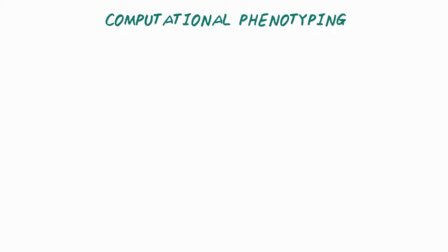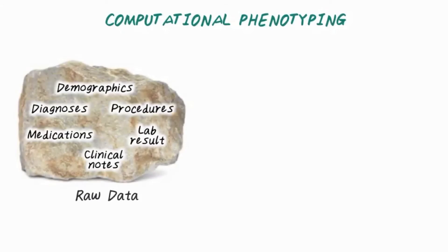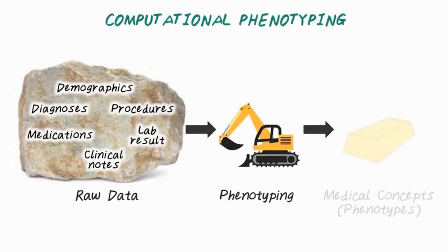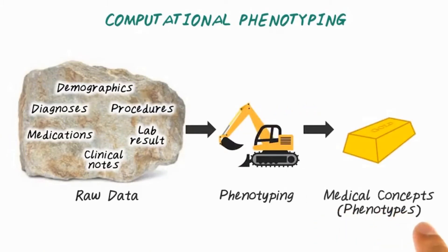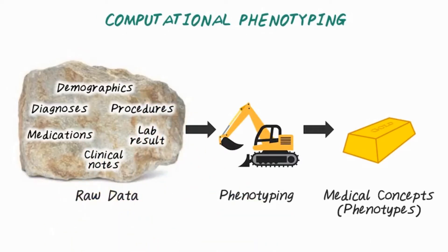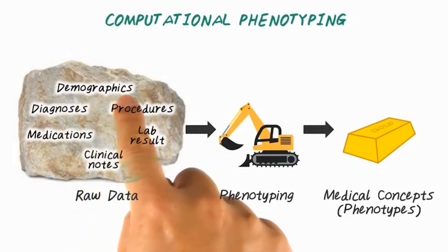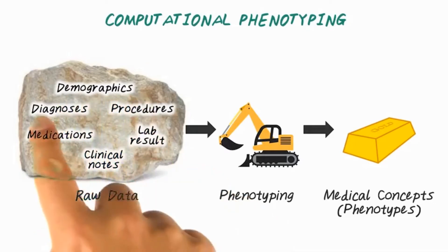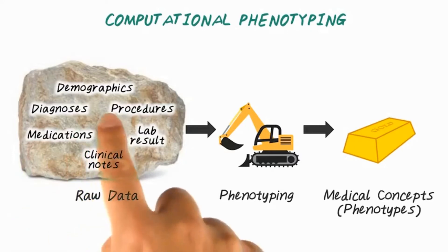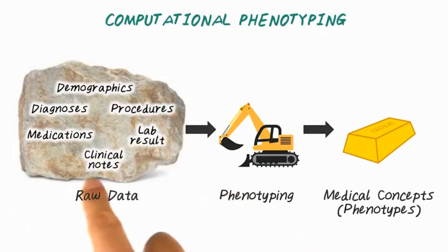Computational phenotyping is about converting raw electronic health records through phenotyping algorithms into a set of meaningful medical concepts or phenotypes. For example, a specific disease can be a phenotype, such as type 2 diabetes. The raw data consists of many different sources, such as demographics about patients, diagnosis codes, medication information, clinical procedures, lab results, and clinical notes.